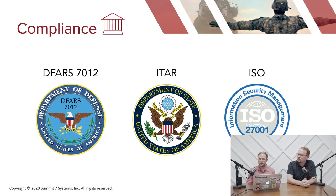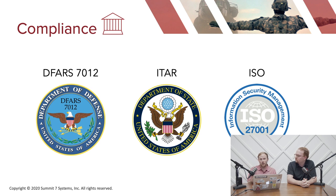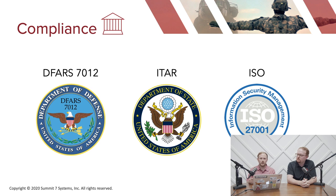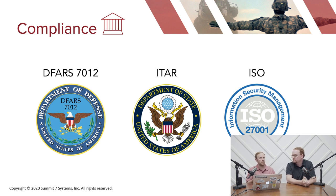From a compliance standpoint, DFARS 7012 predicated much of CMMC. Under DFARS 7012, if you're using a cloud service, there are requirements around where your data is stored. Once you get into ITAR, it matters who is handling your data and how it's reported. From an ISO perspective, there are process maturity elements to how you back up data. Data residency also comes into play — and as we discovered during vendor research, certain vendors simply don't meet these requirements.